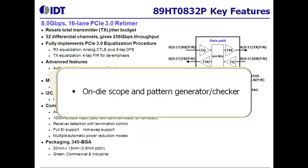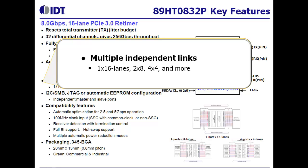The T0832 retimer provides instrumentation features including an on-die oscilloscope and pattern generator checker with built-in and user-defined patterns. The 16-lane architecture can support multiple independent links of 4 or 8 lanes.